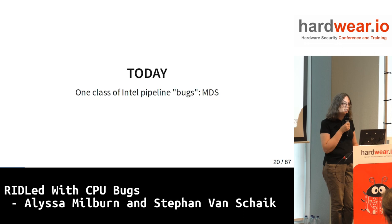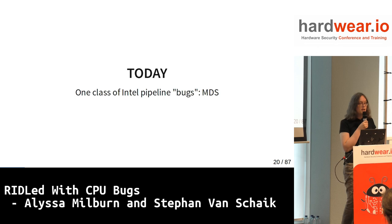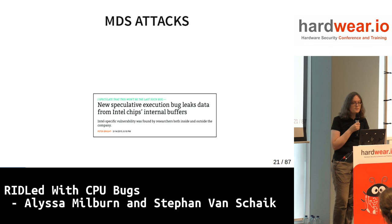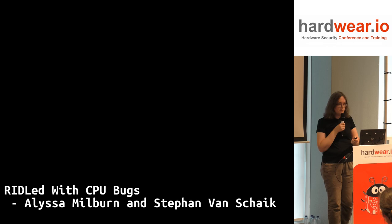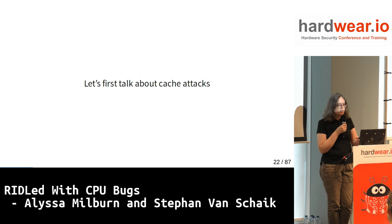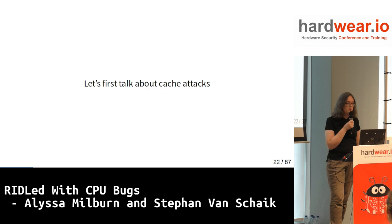We're going to talk about one class of bugs: Microarchitectural Data Sampling attacks. Microarchitectural data means your data in the pipeline, and sampling means reading — if you can sample it, we have your data. These were in the news recently as Riddle, ZombieLoad, and Fallout, because everyone loves fancy names. Stefan is going to talk about cache attacks first, and then we'll go into technical details about how Riddle actually works.